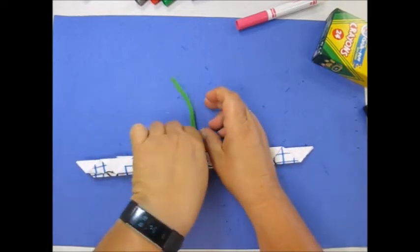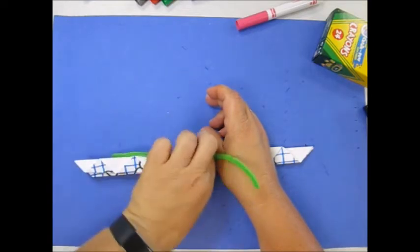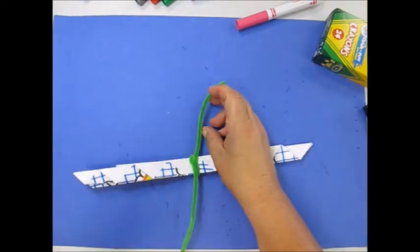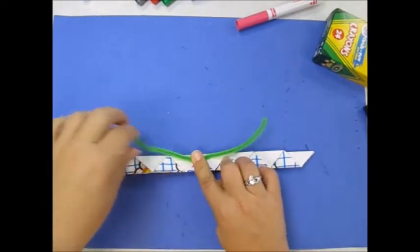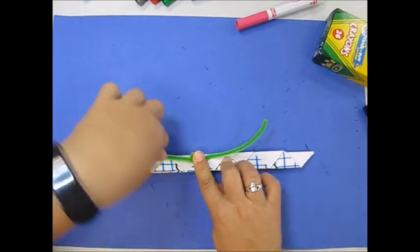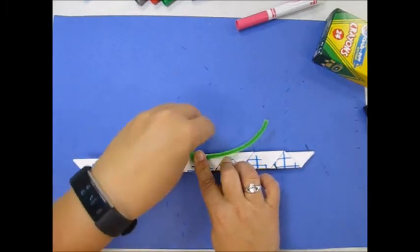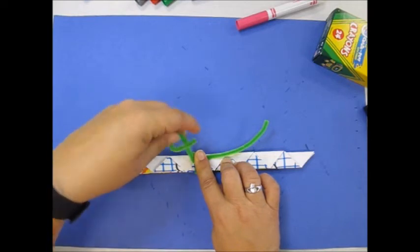Then I take the ends of the pipe cleaner and I twist around my finger to make the antenna.